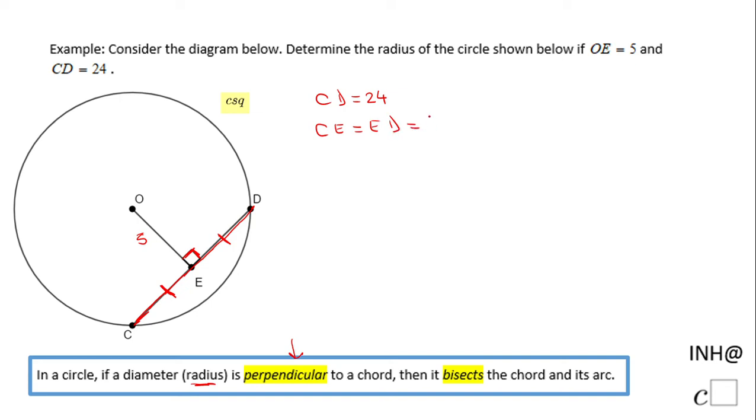They are going to be 24 divided by 2, and that means CE or ED, either one, are going to be 12. Those two segments are congruent because OE is perpendicular on CD, so therefore it bisects CD.